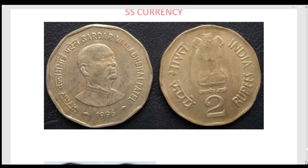This is a very rare coin. This other one is not a rare coin — this is a normal coin. Many Calcutta mint coins exist from 1996. In 1996, we have a rare coin: the Subhash Chandra Bose coin. Let me explain why it is rare.